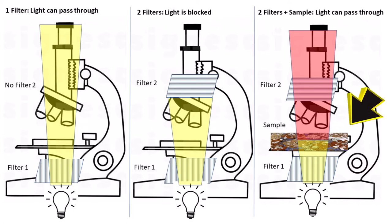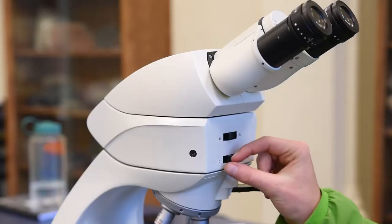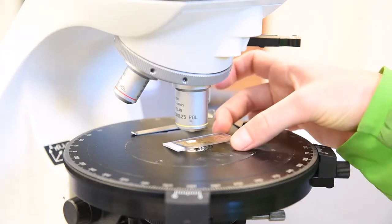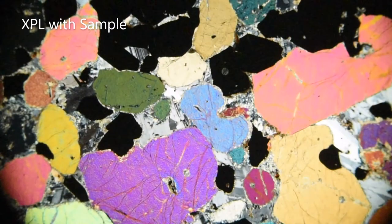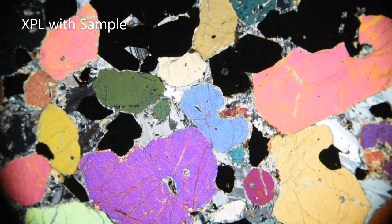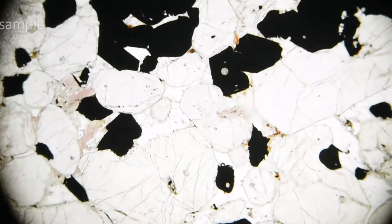However, when we place a rock sample between the filters, the minerals bend the light that would have been cancelled out by the second filter. Here's what it looks like through the microscope with only one filter. As we add in the second filter, the view turns black. When we add in the sample, we now see what are called interference colors because the minerals interfere with the directions of polarized light.